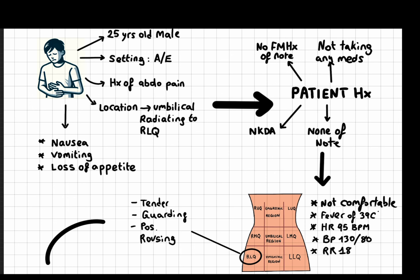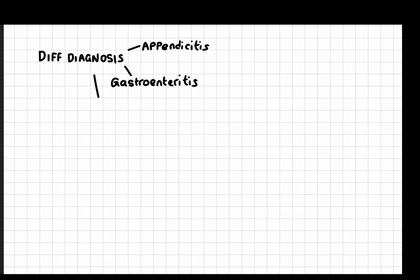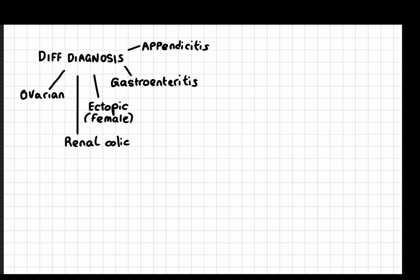Let's move on to the differential diagnosis. Based on the history and physical examination, the differentials include: acute appendicitis, gastroenteritis, ectopic pregnancy (only in females), ovarian torsion (again only in females), and renal colic. However, based on the characteristic migration of pain to the right lower quadrant from the umbilical area, the symptoms most strongly suggest acute appendicitis.